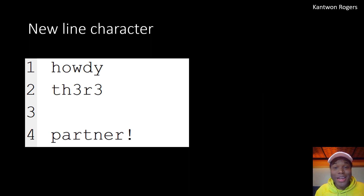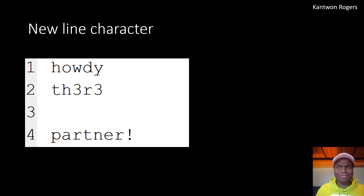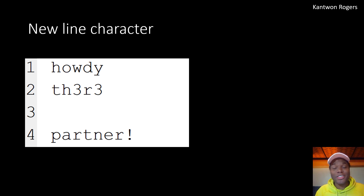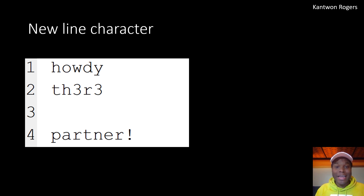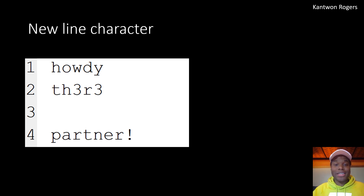Before we talk about actually reading in lines from a text file, we have to discuss why text files can even show data on different lines. You probably never stopped and thought about that — like why is the word 'howdy' on a different line from another word? The reason is that every time you press the enter key, it leaves behind an invisible character inside your file telling your computer to display the next thing on a different line. We call this the newline character.